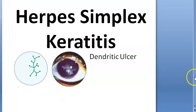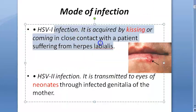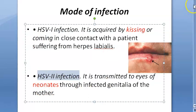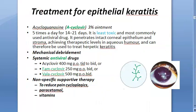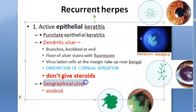Herpes simplex keratitis: dendritic ulcer is the hallmark. It is a DNA virus, mainly HSV-1 (acquired by kissing). HSV-2 can be transmitted to a neonate from the infected genitalia of the mother. In primary herpes, only the corneal epithelium is affected — not the stroma. Features include punctate keratitis and dendritic ulcer. Treatment: acyclovir.